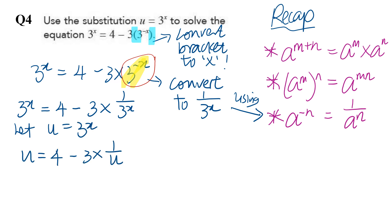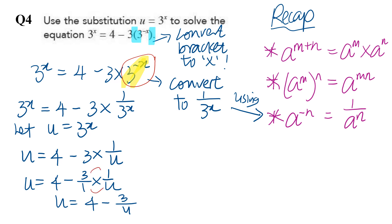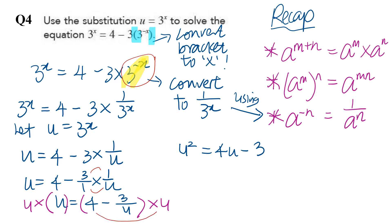We substitute three to the power of x with the letter u as stated in the question, ending up with u equals four minus three times one over u. Writing three as a fraction: three over one times one over u gives u equals four minus three over u. Multiply every term by u to eliminate the fraction: u squared equals four u minus three. You end up with a quadratic equation which you can factorize.